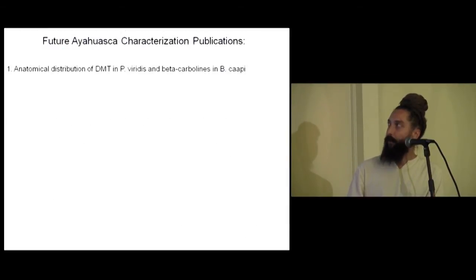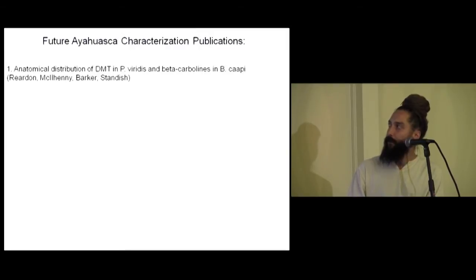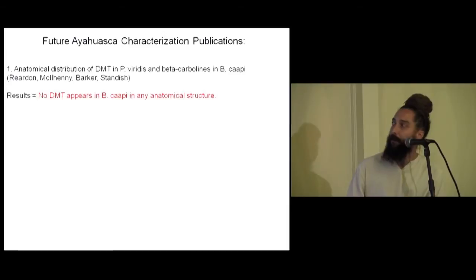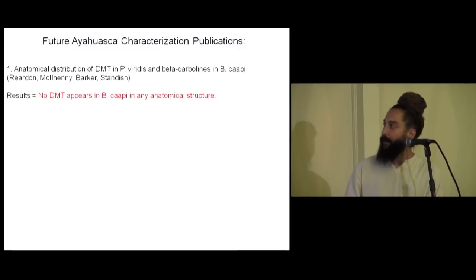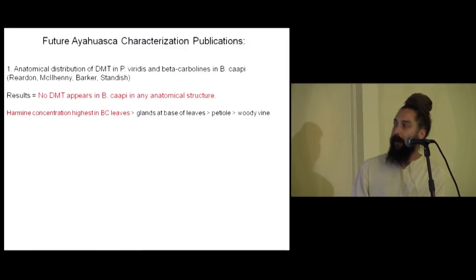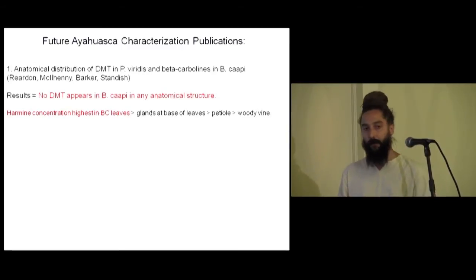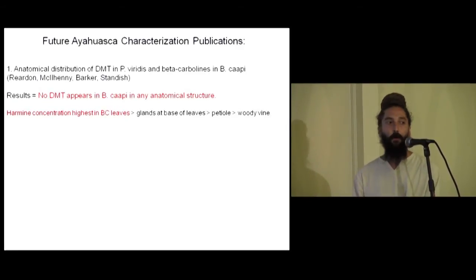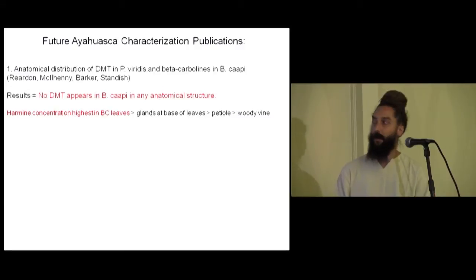We also have a number of future ayahuasca publications, looking at the anatomical distribution of DMT in Psychotria viridis and beta-carbolines in Banisteriopsis caapi. We found that no DMT is in B. caapi — the vine. That was pretty well known but never actually demonstrated. Interestingly, we actually find the highest amount of beta-carbolines in the leaves, lesser amounts in the glands, and actually the least amount in the vine itself. There could be a whole number of different compounds that we're totally unaware of.